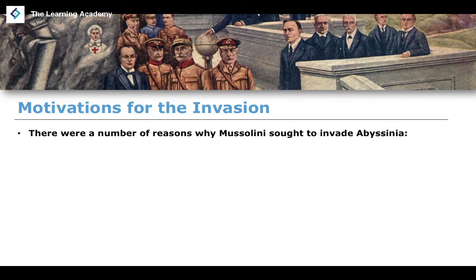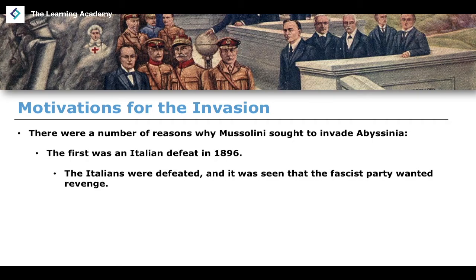There are a number of reasons why Mussolini sought to invade Abyssinia. Firstly, there was an Italian defeat in 1896, and it was seen that the fascist party wanted revenge. A lot of the ideology of both the Nazi party in Germany and the fascist party in Italy involved seeking revenge for past defeats — with Germany, revenge against France in World War I, and with Italy, one instance being that 1896 defeat.